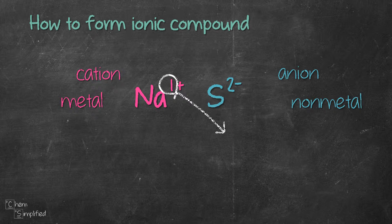1 will cross over to S and 2 will cross over to Na. That will give us Na2S1. Now since we don't write out the 1, the formula will just be Na2S.